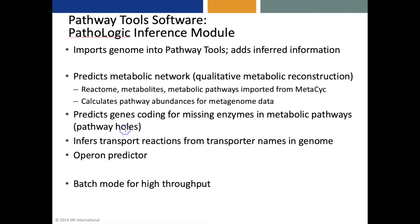It will also calculate pathway abundances for metagenome data. It will predict the genes coding for missing enzymes in metabolic pathways, which we call pathway holes. It will also infer transport reactions from the names of transporters in the annotated genome, and it has an operon predictor. Pathologic can be run interactively, but it can also be run in a batch mode for processing hundreds or thousands of genomes.